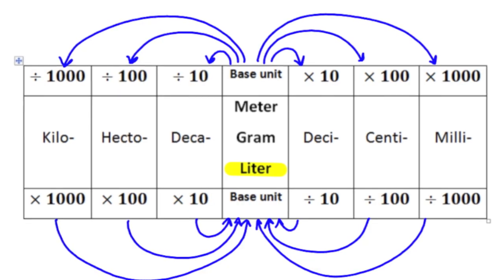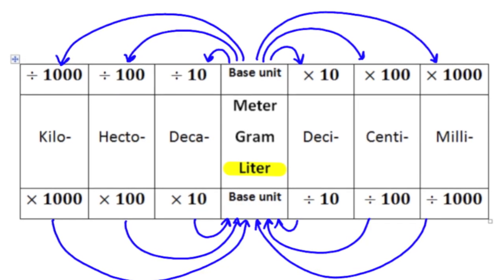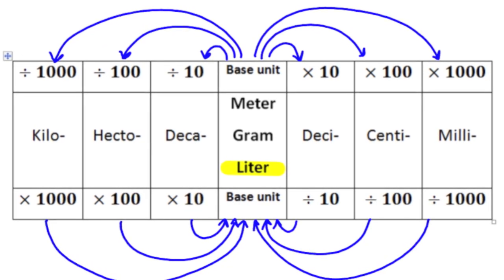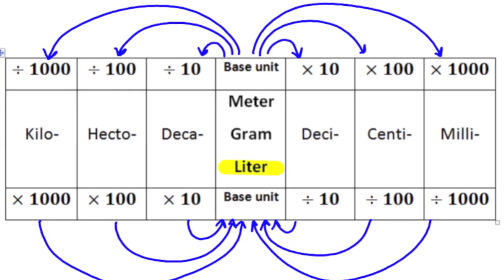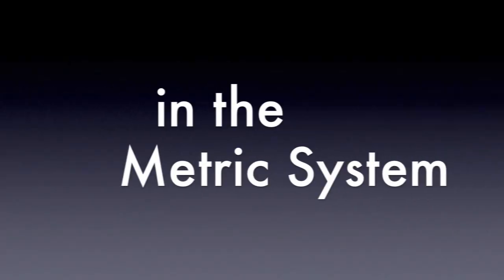It's kilo, hecto, deca, deci, milli. That's biggest to smallest in the metric system.